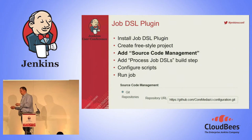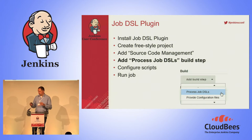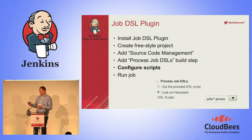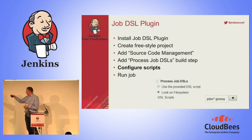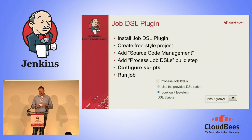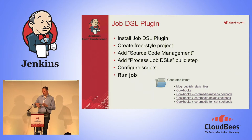You want to put your DSL scripts into source code management, so you configure your Git repo. There's a build step that comes with the DSL plugin, and you configure where to look for the scripts. You can choose to look on the file system, or choose the other option which gives you a text area to enter your script directly. But that's more or less for testing or playing around — it's not recommended for production since we want to trace our changes in source code management. Then you run the job, and in this case four or five jobs have been generated.